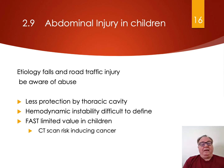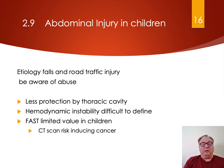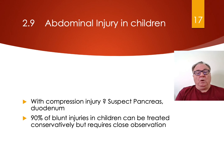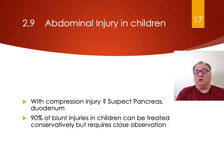Children. The etiology of injury in children is usually falls or road traffic injury, but you must be aware of child abuse as well. Children have less protection because their thoracic cavity is more mobile, they're hemodynamically unstable, and FAST is of limited value in children. CT scan carries the risk of inducing cancer. With compression injuries, suspect pancreas or duodenal injuries in children. Ninety percent of blunt injuries in children can be treated conservatively, but requires close observation.